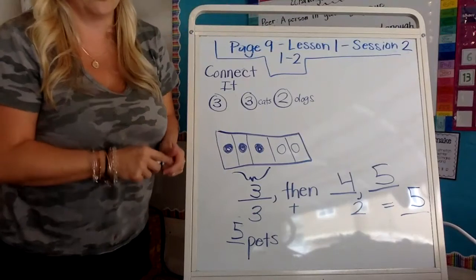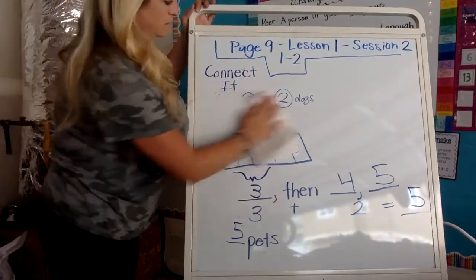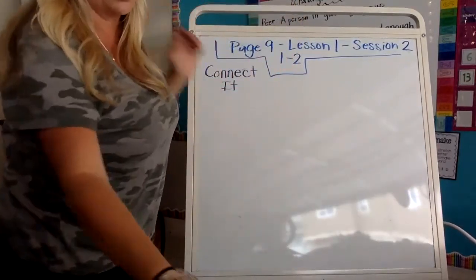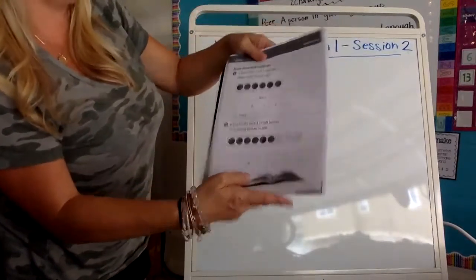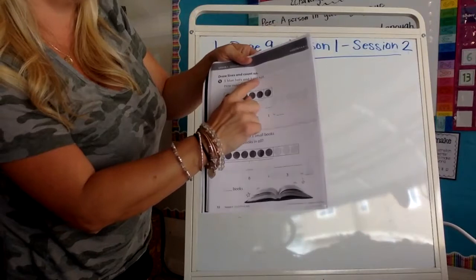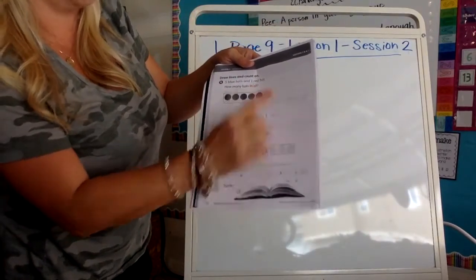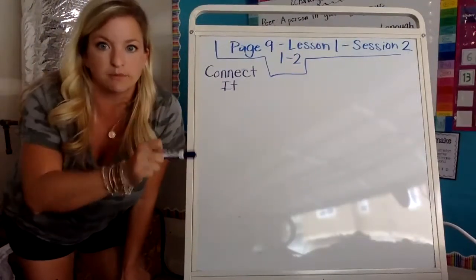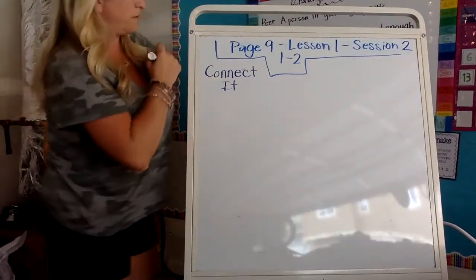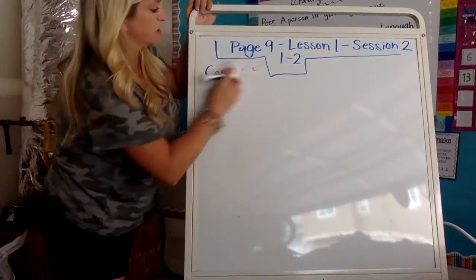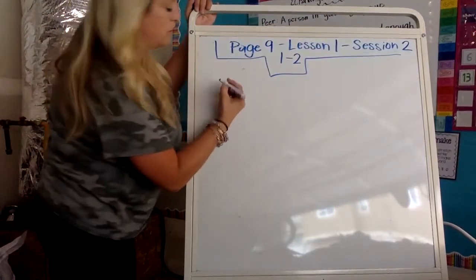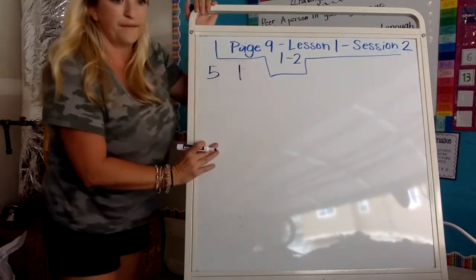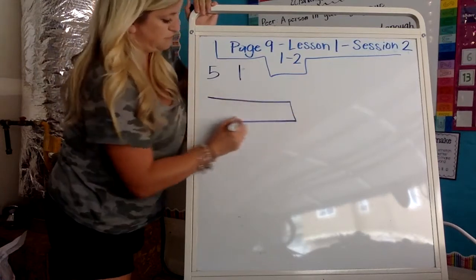Now I'm on page number 12, problem number four. It says draw lines and count on. Number four, five blue hats and one red hat. How many hats in all? First job is to circle the numbers. Say circle the numbers. You're going to circle those numbers. You're going to circle five and you're also going to circle one. And then it has the same thing here.